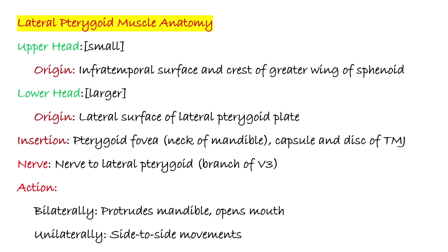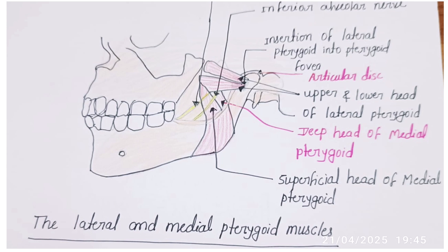Lateral pterygoid muscle has a short conical shape and is the only muscle that opens the jaw. It has two heads: an upper head, arising from the infratemporal surface and crest of the greater wing of the sphenoid, and a lower head, arising from the lateral surface of the lateral pterygoid plate. It inserts on the pterygoid fovea, capsule, and disc of the temporomandibular joint. It is supplied by the nerve to the lateral pterygoid, a branch of the mandibular nerve. Bilateral contraction causes protrusion of the mandible and unilateral contraction helps with side-to-side movement. Notice how the lateral pterygoid connects to the TMJ capsule and disc, making it crucial in jaw opening and sliding movement.